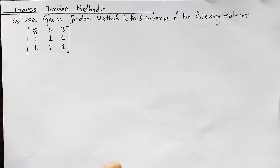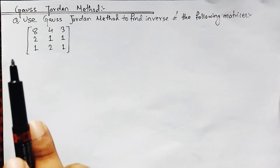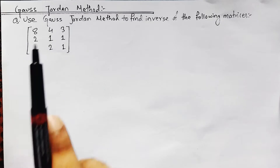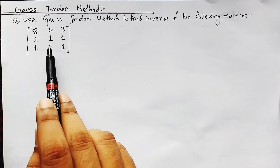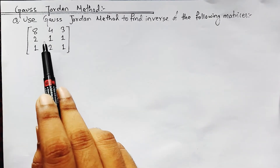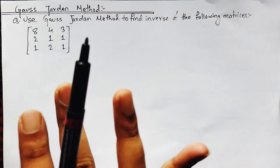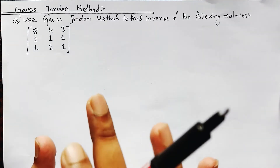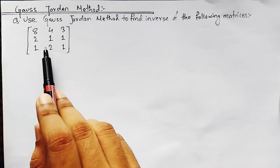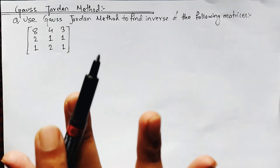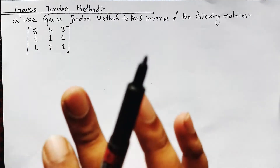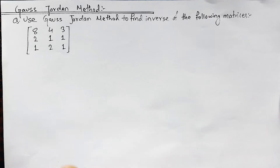This numerical is a bit different from the problem provided in the link, because here I am going to show you how to use a matrix property — that is, we can interchange two corresponding rows of a given matrix, as well as columns. So here we can interchange rows and columns, and I will show you why. Without any further delay, let's get started.